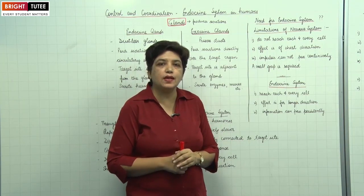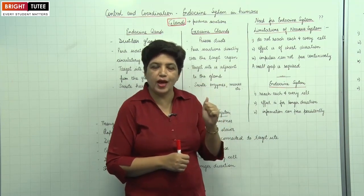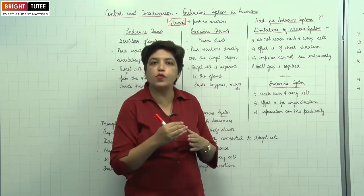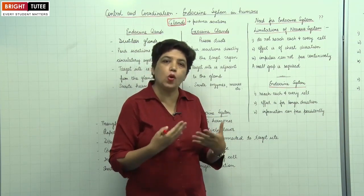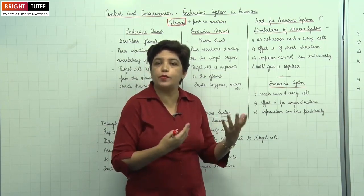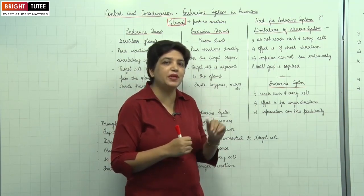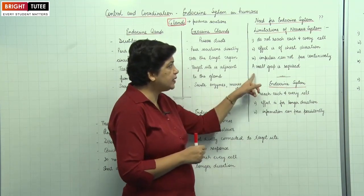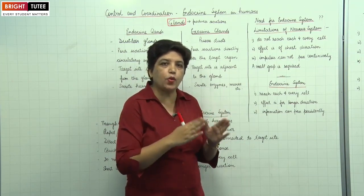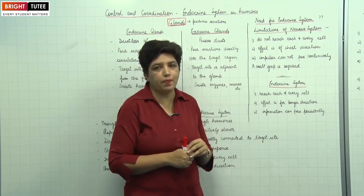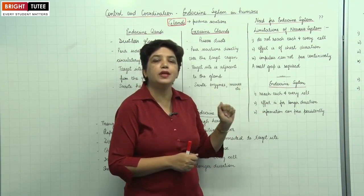As we discussed in the reflex arc, if you touch a hot surface you immediately remove your hand and the impulse dies — the effect was for a very short duration. But in certain cases, such as for growth and development, the effect is required for a much longer duration. That is a limitation of the nervous system. Thirdly, in the nervous system, impulses cannot pass continuously — a small gap is required between two impulses. These limitations are overcome by the endocrine system.